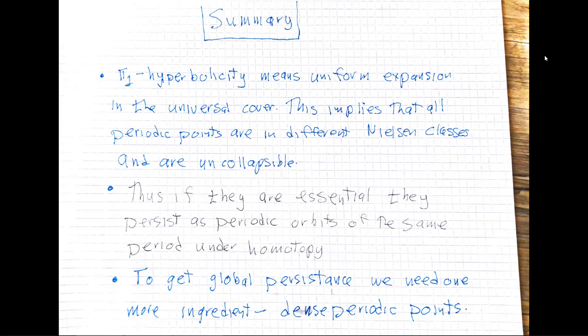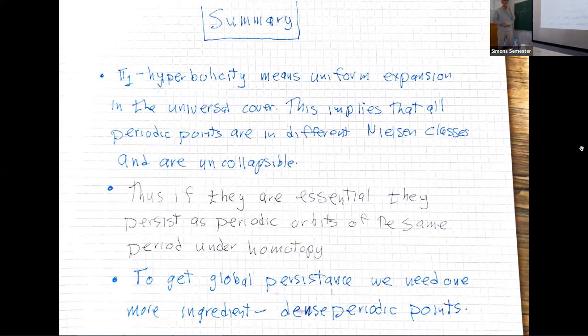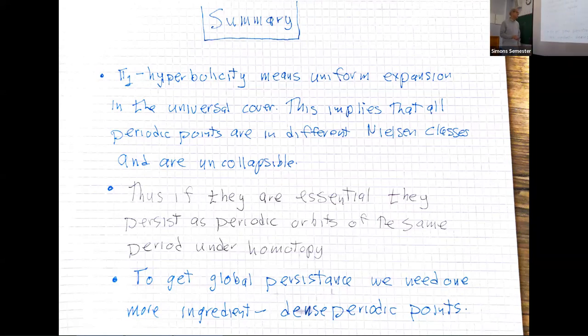Examples include Anosovs on tori, maps on wedges, and pseudo-Anosovs, which inspired a lot of this work. The next stage is to go one step further: not just have periodic points persist, but all the dynamics persist. That's where global shadowing comes in.